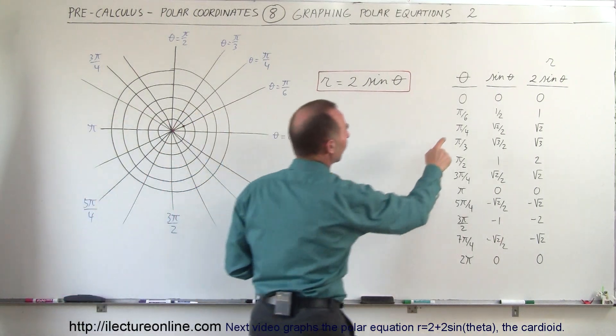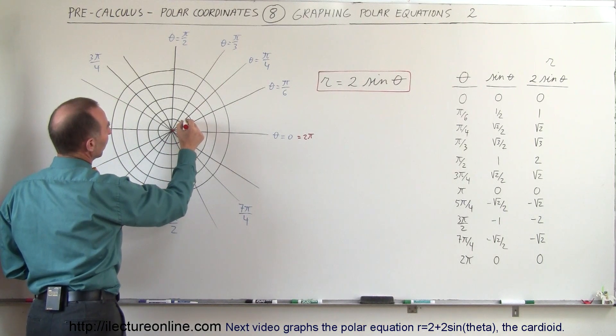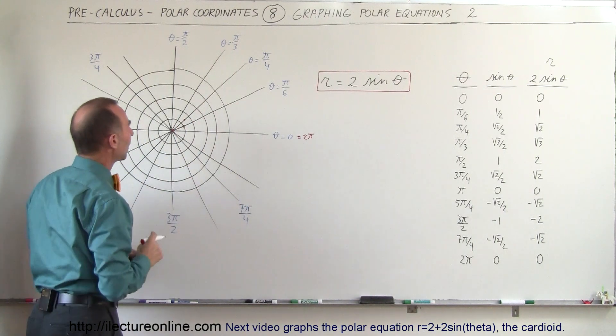The next point is at π divided by 4. We can see that r is the square root of 2, and at this point square root of 2 is 1.4, that would put it right about there.